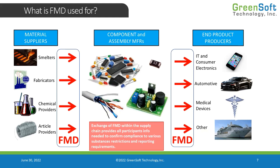The component manufacturer can't tell you whether or not they have a warning need for Prop 65 unless they know what substances are present in their component. That's why they need this data from the material suppliers, and the same with the end product producers. The full material declaration just facilitates that communication of information.